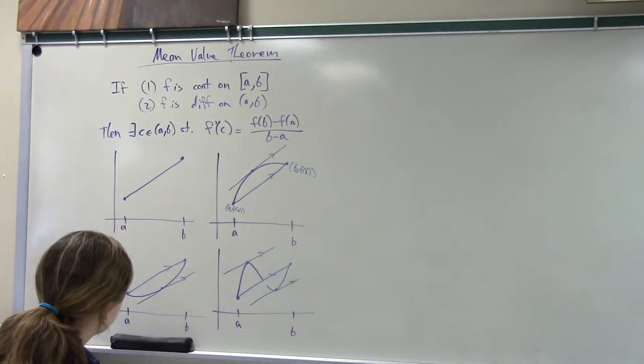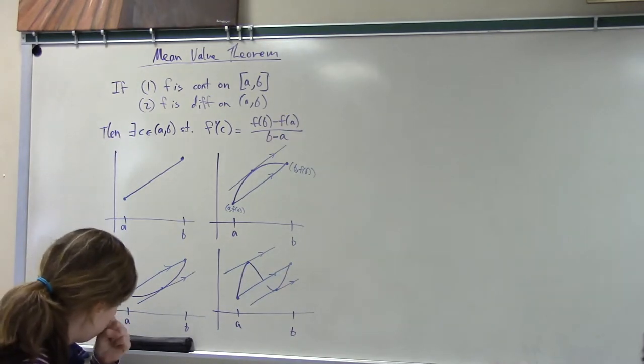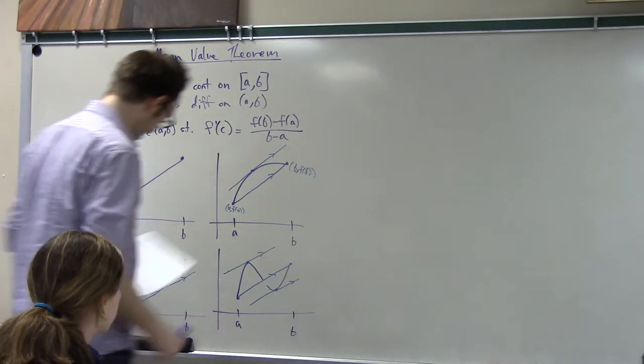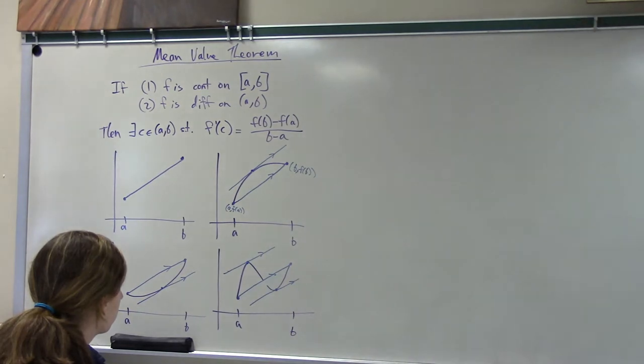And the derivative is the instantaneous rate of change. So on a deep level, what the mean value theorem says is that somewhere on any interval, the instantaneous rate of change equals the average rate of change on that interval. Yes? I kind of feel like we could prove this with the other one. Yeah, we definitely can. Yeah. Okay, could someone, responsible and normal, turn the camera over here for a minute?